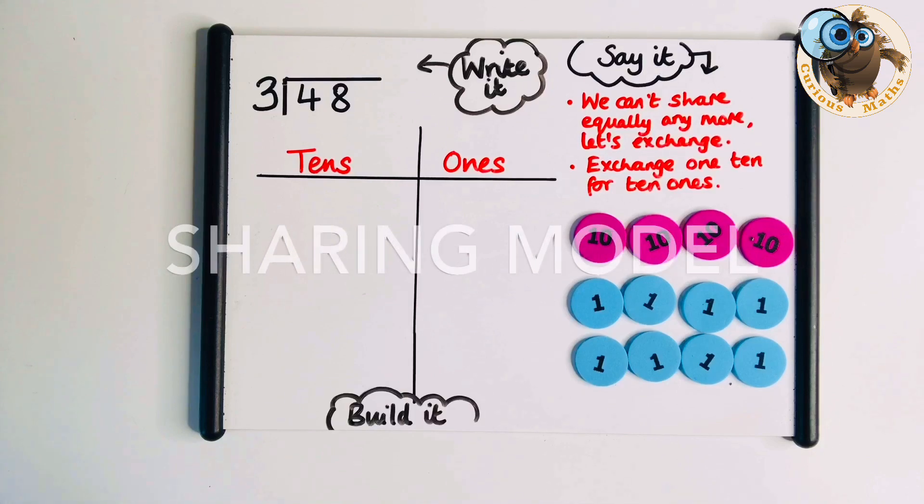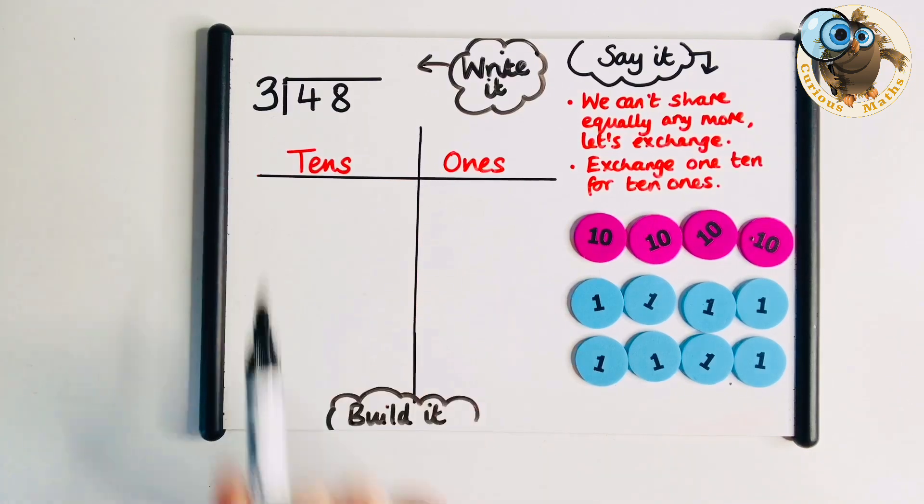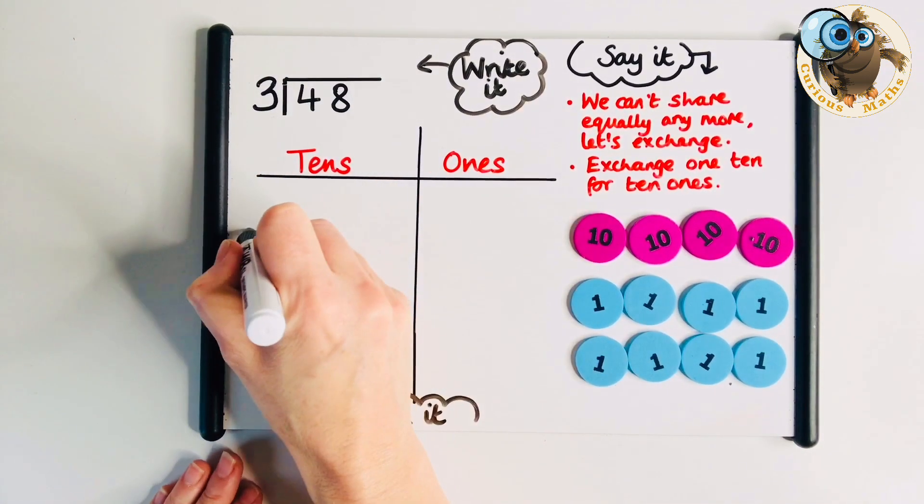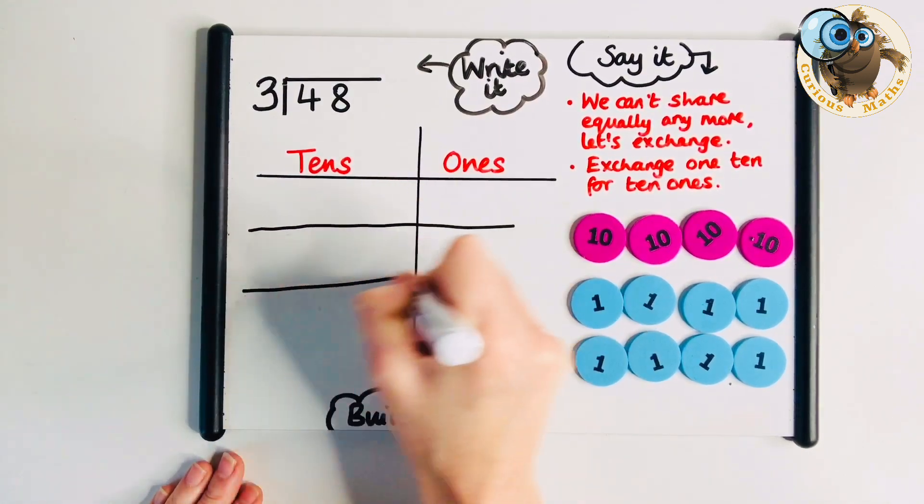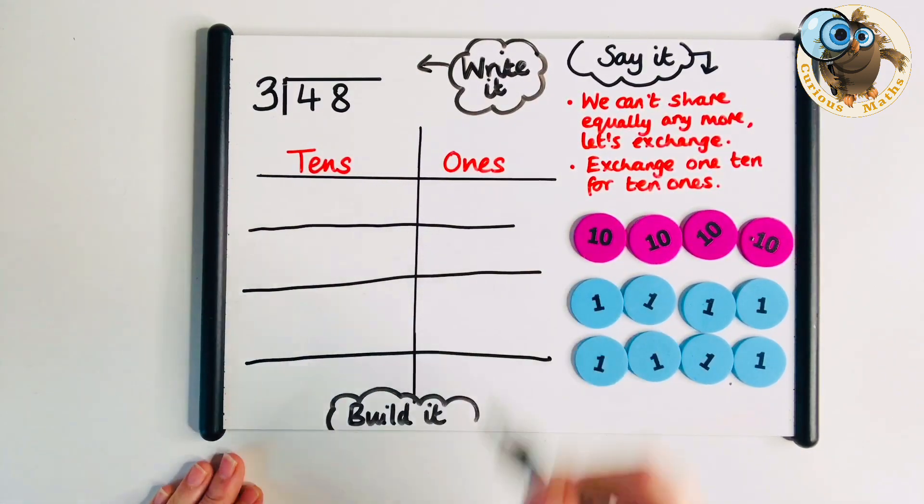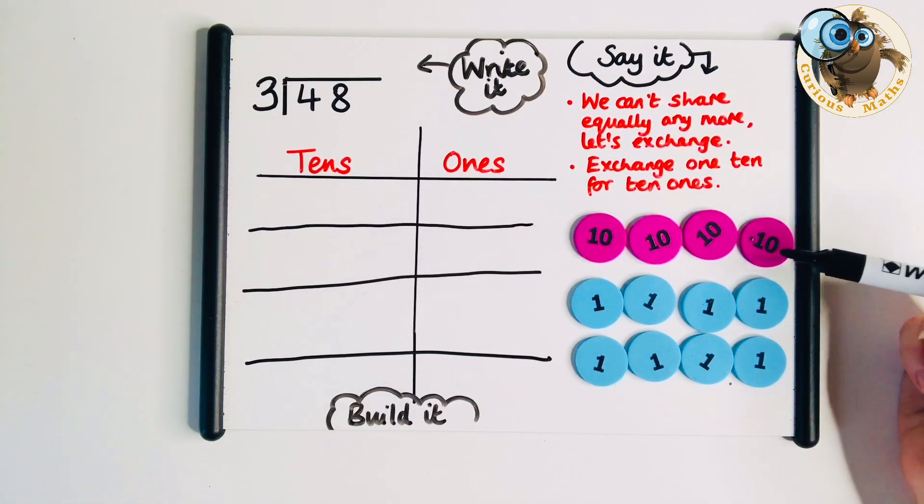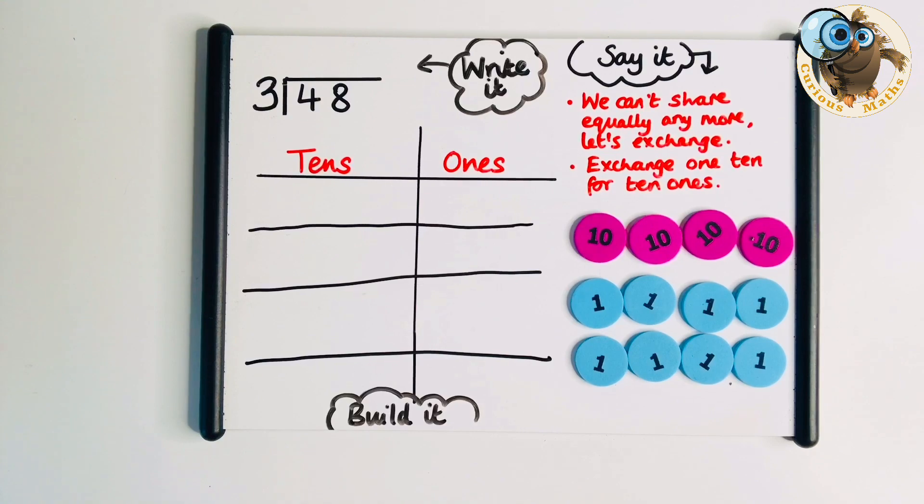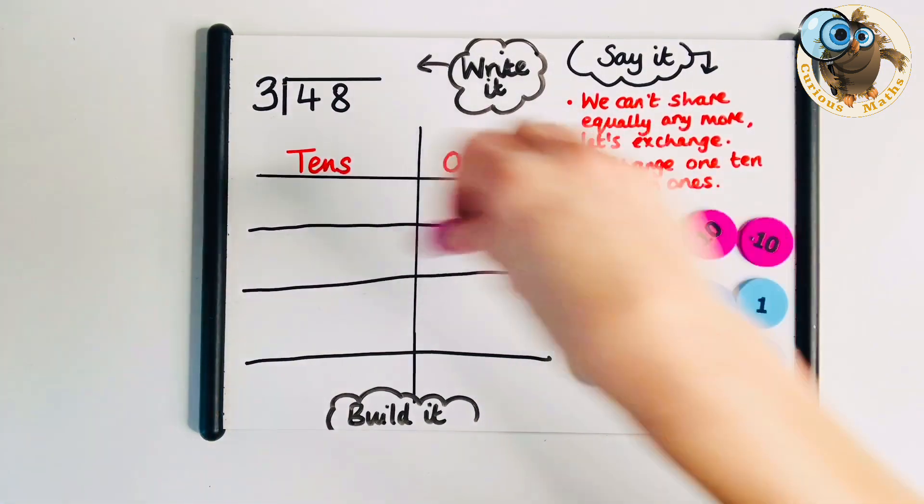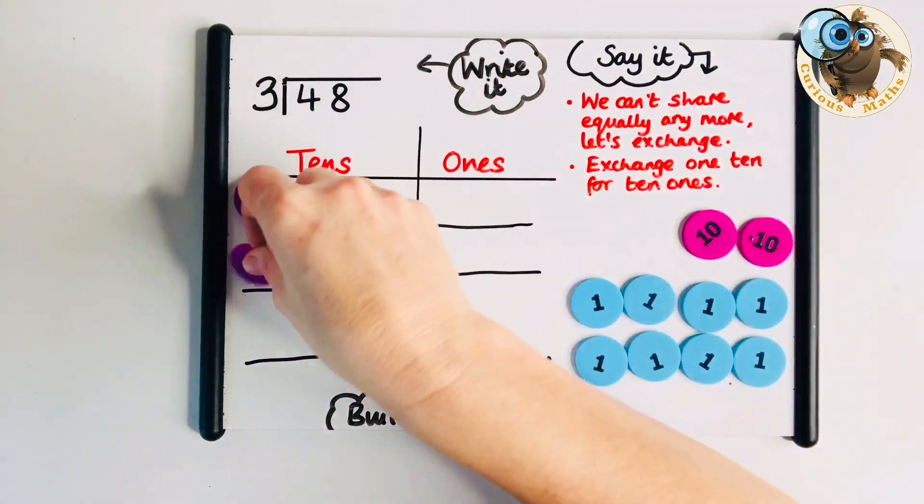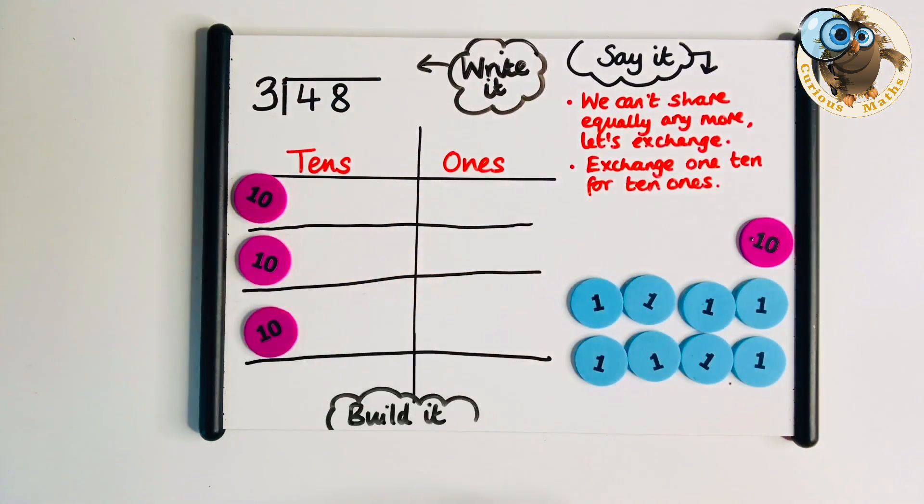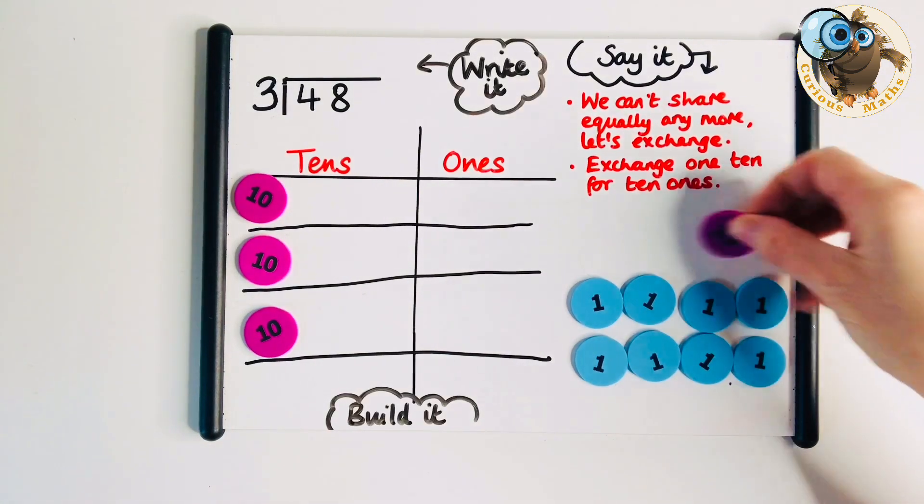Let's make it a little bit harder. We've got 48 shared equally between 3 people. Just like before, to keep the model consistent, we draw 3 rows for place value counters. We've made 48 and now share it equally amongst the 3 people. We start with our tens and share them equally. But look, we have one 10 remaining.